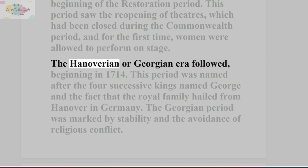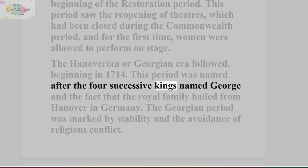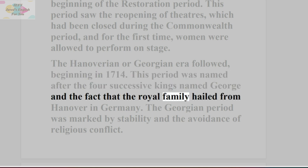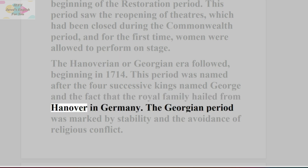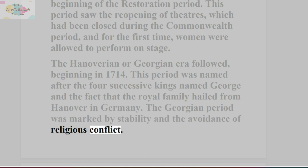The Hanoverian or Georgian era followed, beginning in 1714. This period was named after the four successive kings named George and the fact that the royal family hailed from Hanover in Germany. The Georgian period was marked by stability and the avoidance of religious conflict.